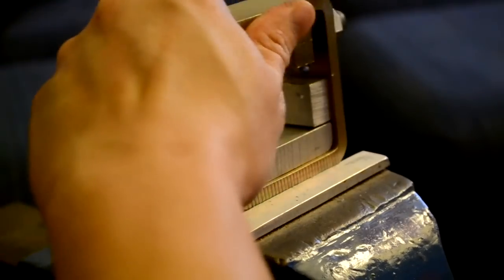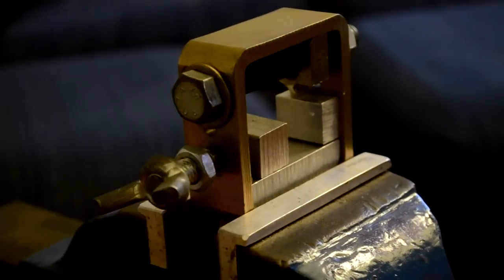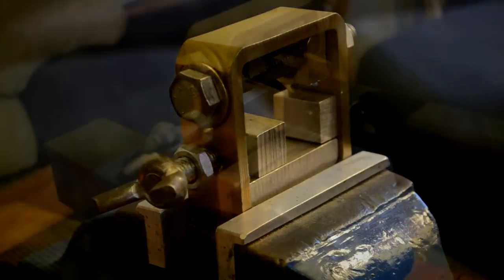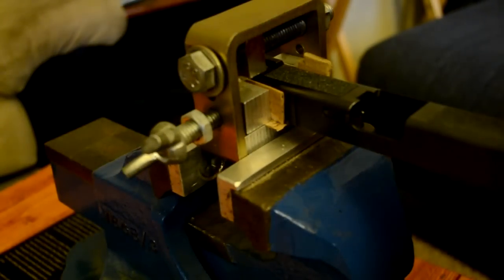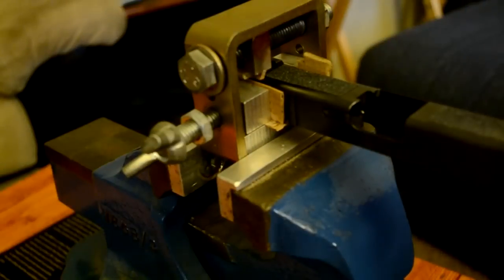Next we'll need to remove the rear sight. My preferred method is to use a sight pusher like the one I show here. Make sure to apply some kind of non-abrasive material such as cardboard or leather to make sure you protect your finish. In addition, make sure you put it in between the sight pusher itself and the rear sight.